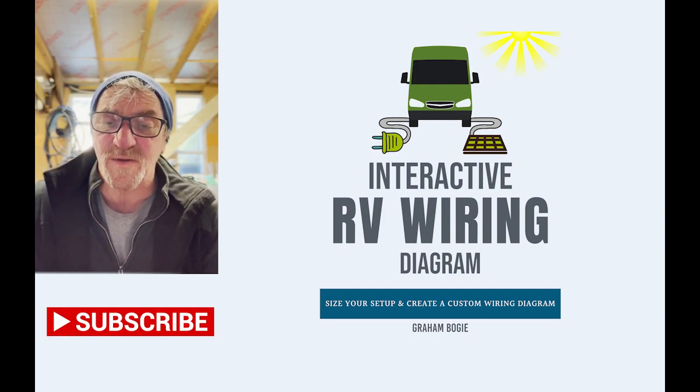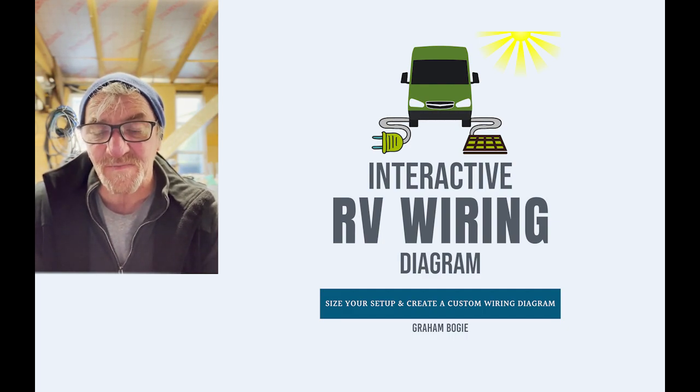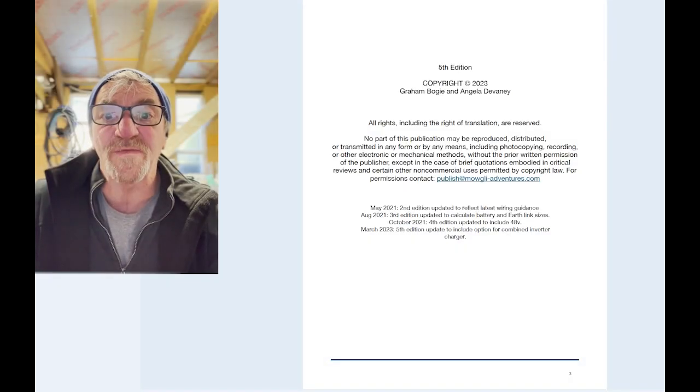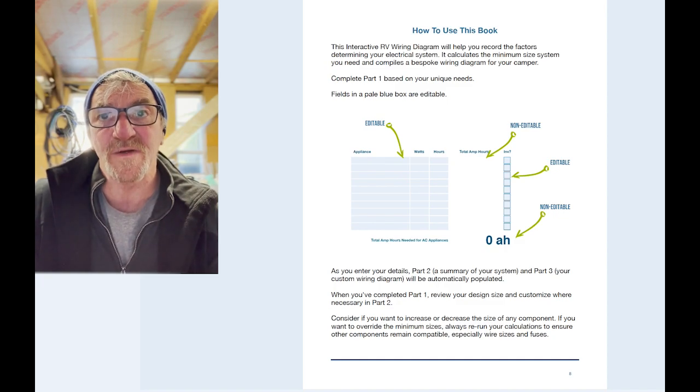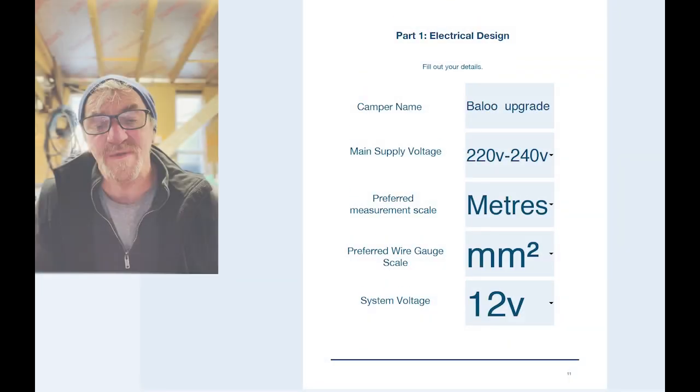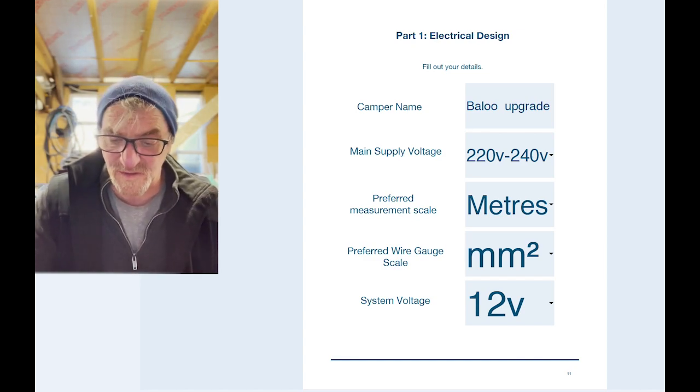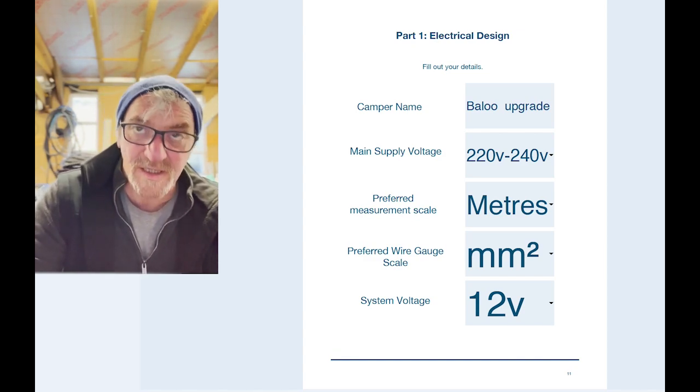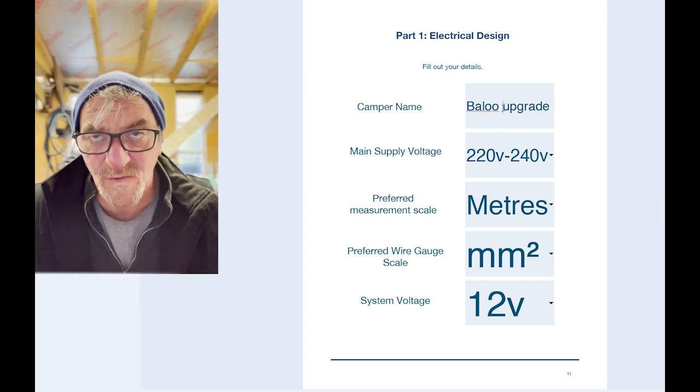Once you've downloaded both the Adobe reader and the interactive tool, you can start it up. The first few pages are all about how you would use the design tool and we get to the first part, part one, setting up the basics of our design. So firstly I have a camper name, I'm going to call this project the Renogy upgrade, which is what I'm actually doing, but you can call yours whatever you want.